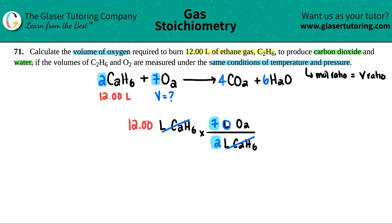Now technically you could have said mole and mole, but I like to write it as liters because it nicely cancels them out. So let's see. So 12 times 7 divided by 2 is 42. So technically you should have four sig figs. So there's your volume of oxygen, 42.00 liters of O2.